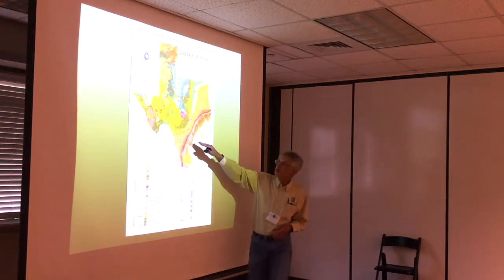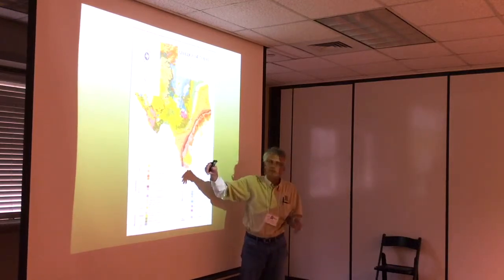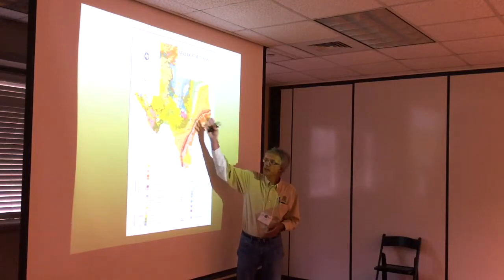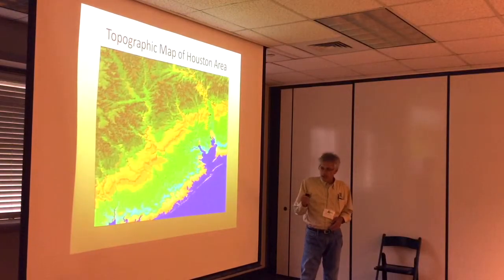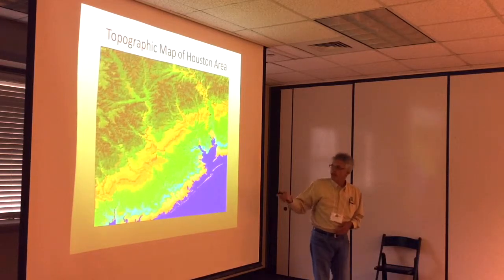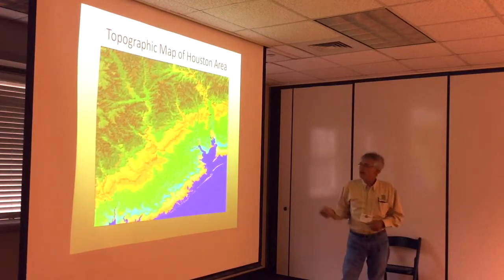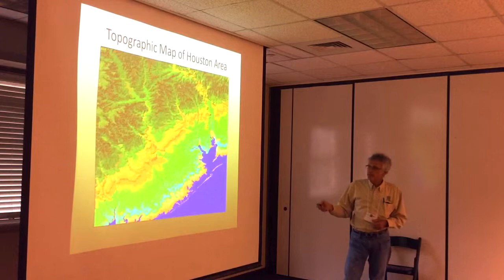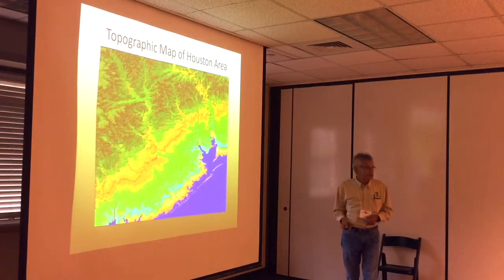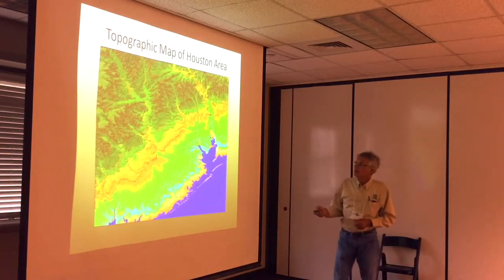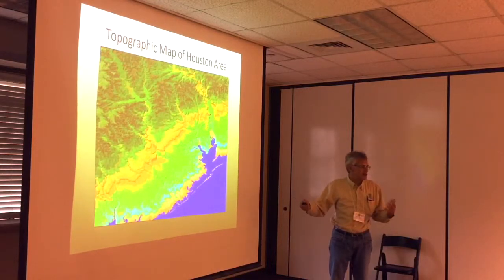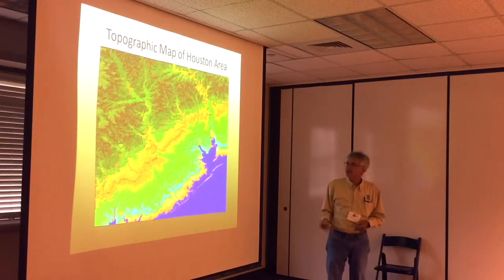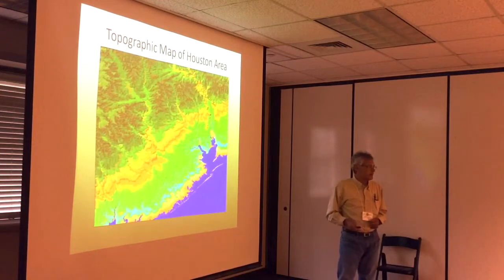The point where it broke with the continent itself would be Balcones Fault. On this topographic map, when we talk about the coastal prairie, we're talking about the youngest piece of this coastal plain. The higher areas are dissected landscapes, but it's this young, very flat area dominated by grasses.